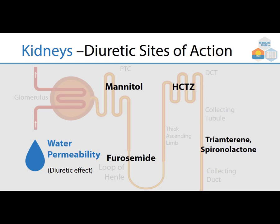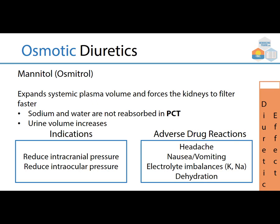Replacing those permeability levels with drug names: mannitol works at the proximal convoluted tubule and has the most diuresis — used for conditions like intracranial pressure. It expands systemic plasma volume, forces faster kidney filtration, and sodium and water are not resorbed in the PCT, increasing urine volume and reducing intracranial and intraocular pressure. Adverse drug reactions include headache, nausea, vomiting, electrolyte imbalances, and dehydration — usually used in a medical emergency.